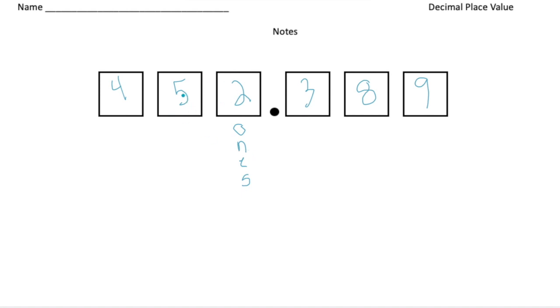To the left of this, this is the tens value. So we have five groups of tens. And then to the left of that, we have the hundreds value.